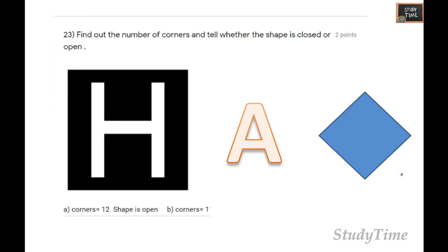Find out the corners and tell whether the shape is closed or open. You have to find the corners here: 1, 2, 3, 4. Tell whether the shape is open or closed. Here, H shape is open. This is closed, and this is closed. Here the number of corners is 4. The same way you have to find for H and A.